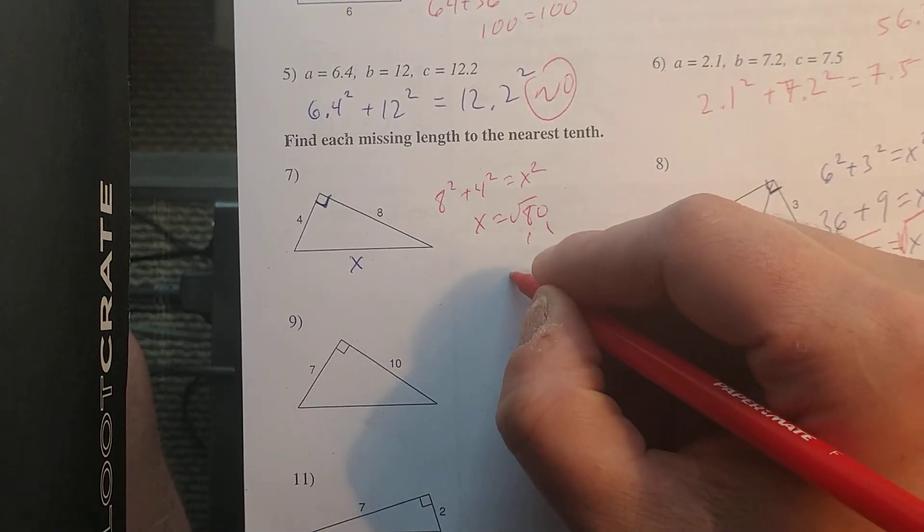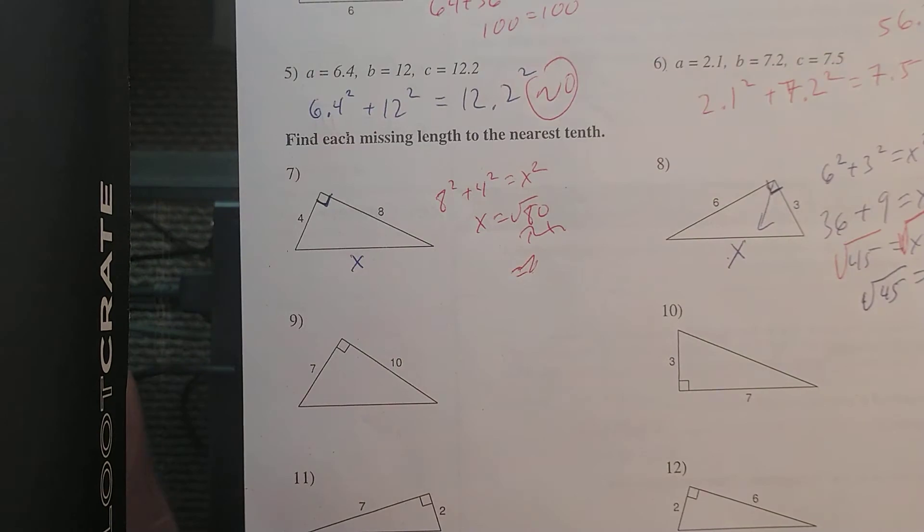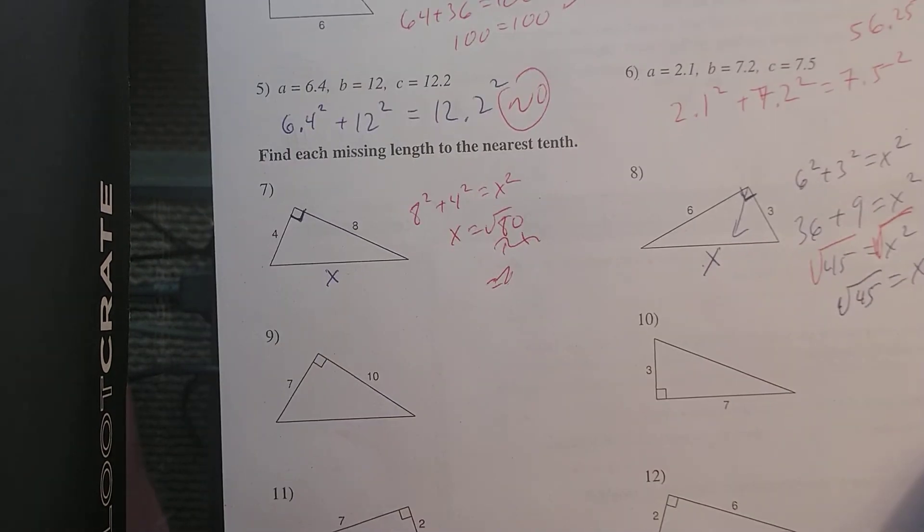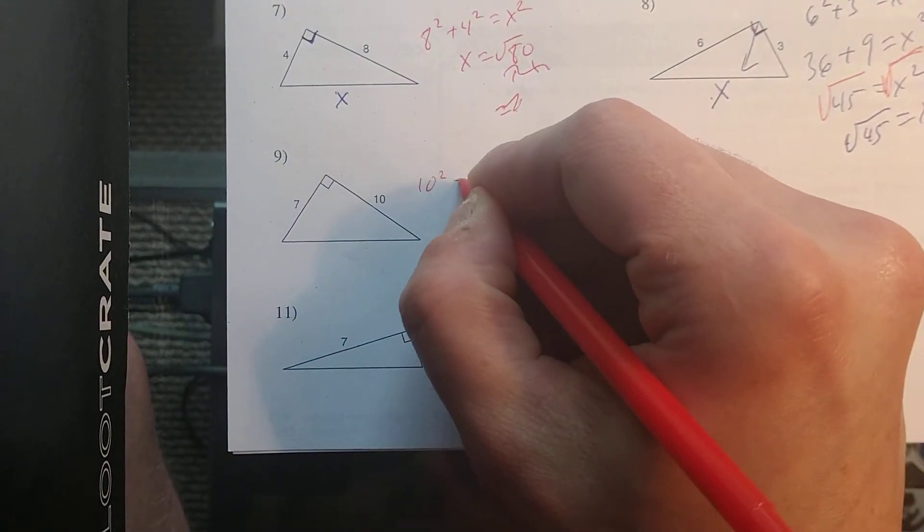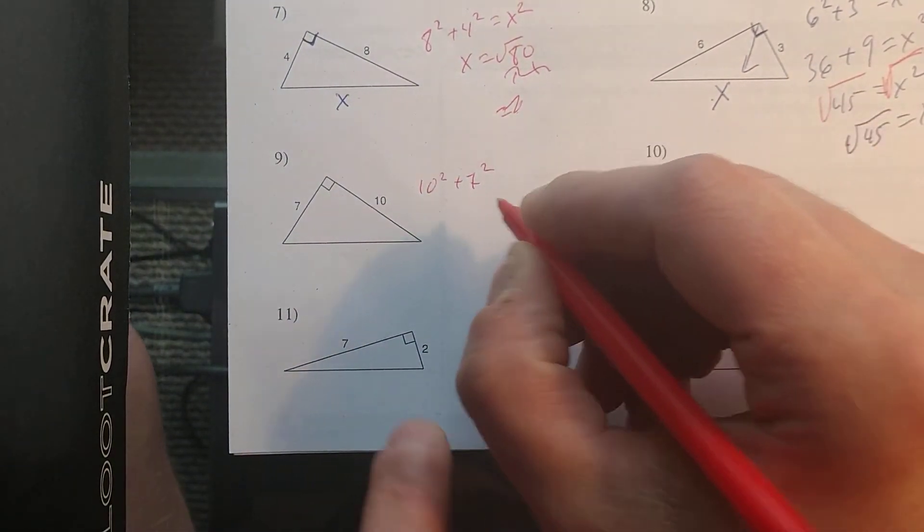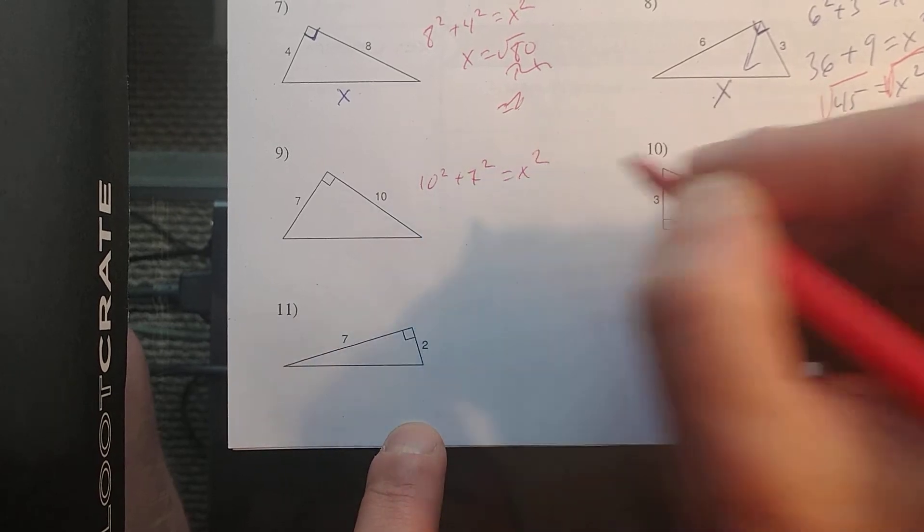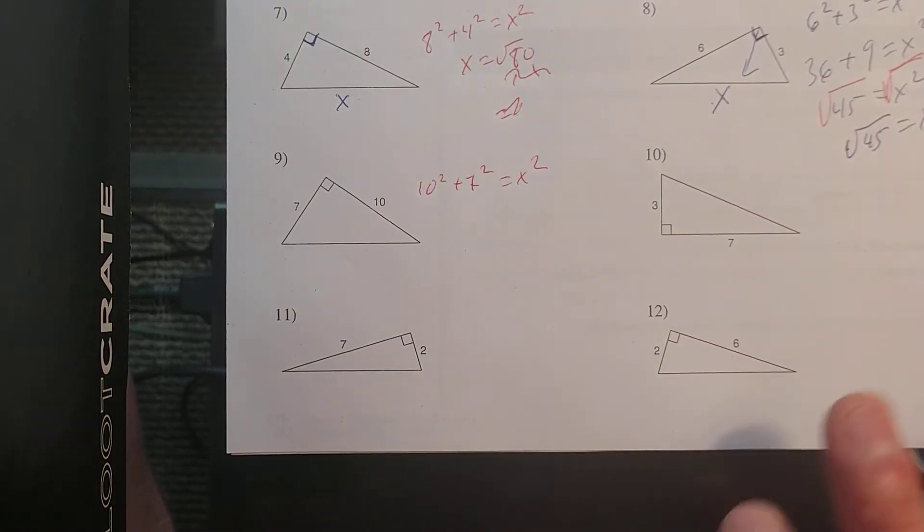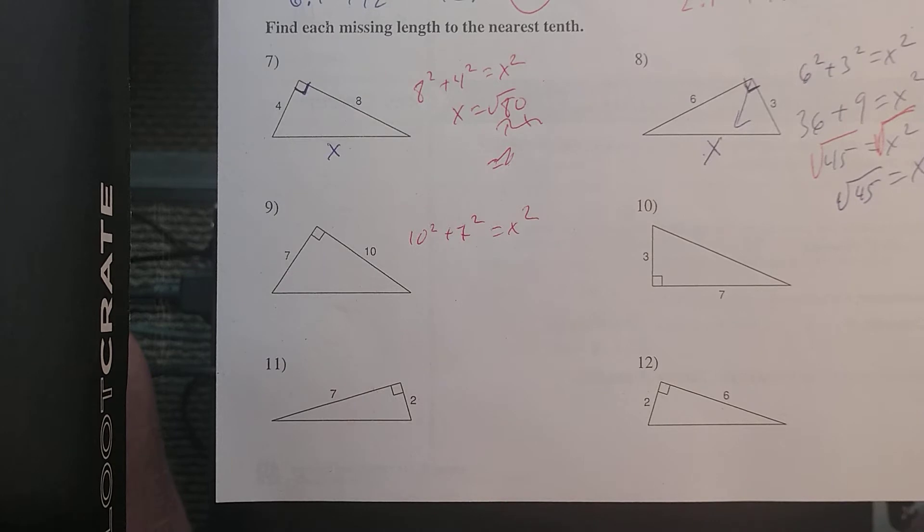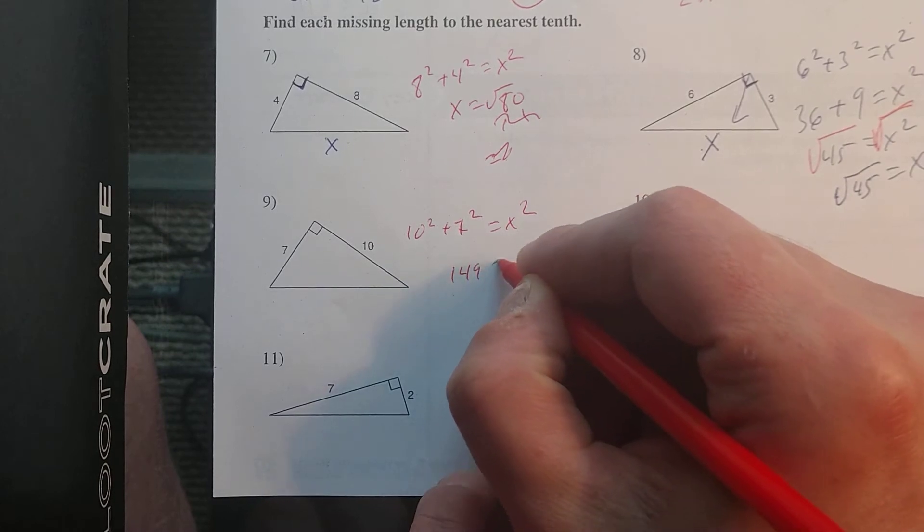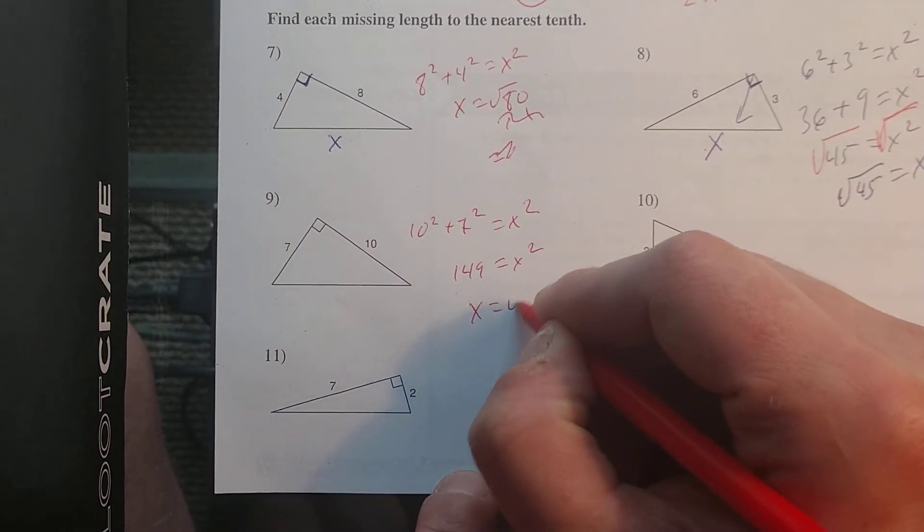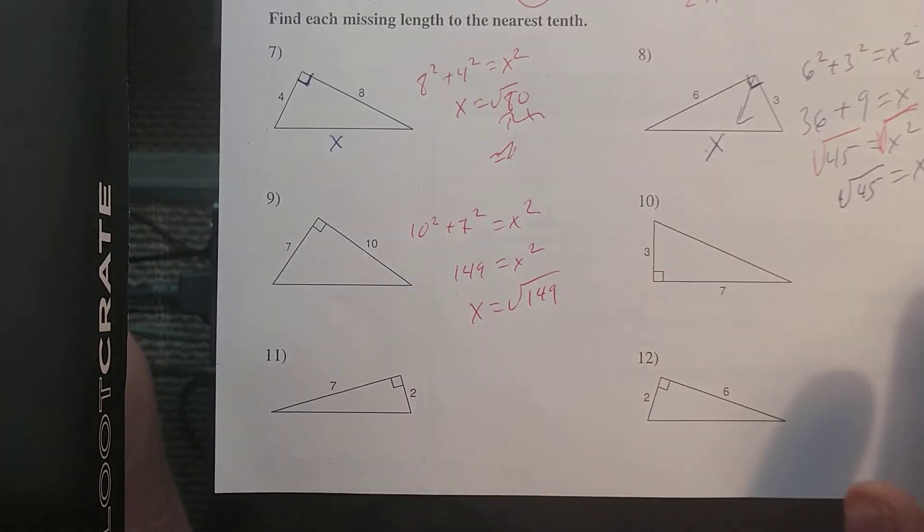And then if we wanted to, just to show it to you. Just X square root of 80. And then I did eight for you. For number nine, this is going to be 10² + 7² = X². And when I go through that, I get 149 = X². And then square root of both sides.